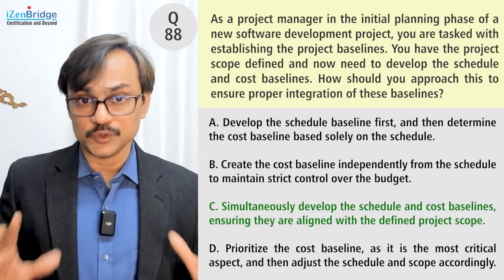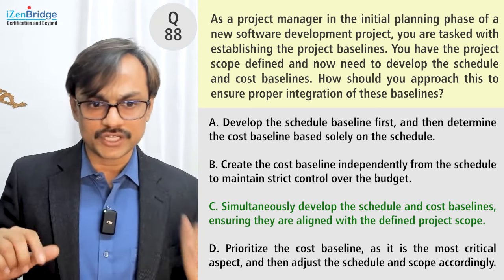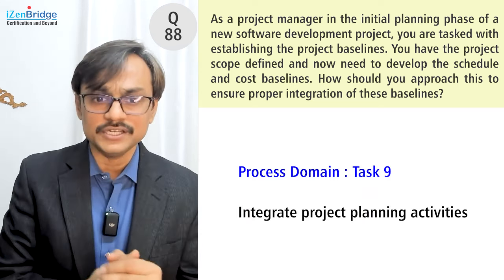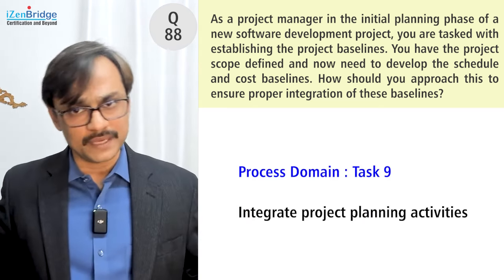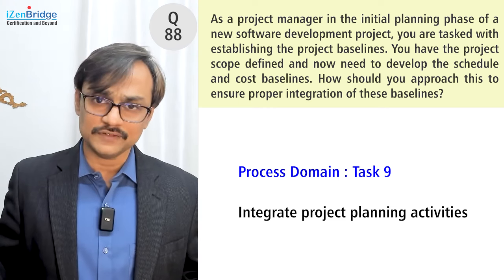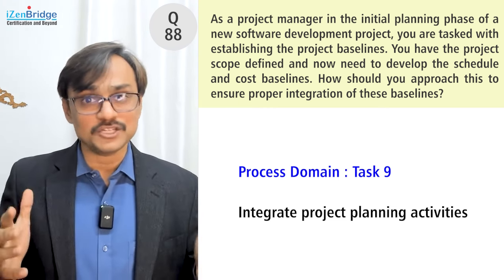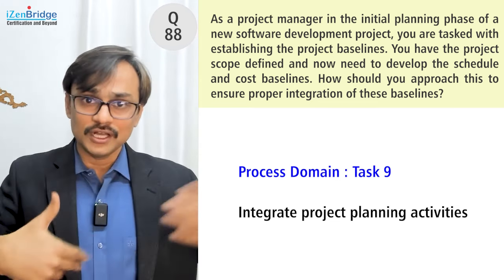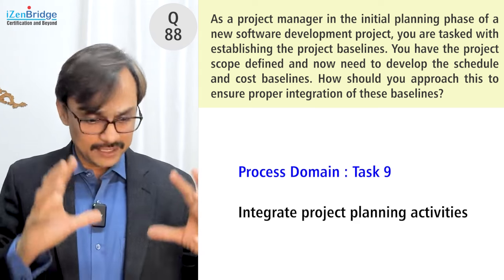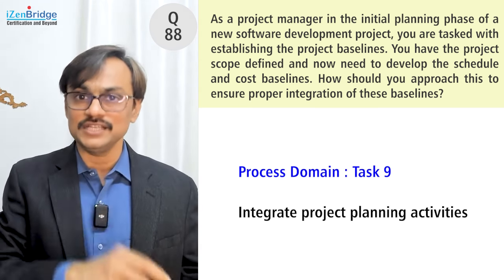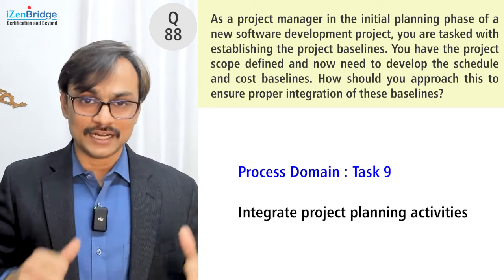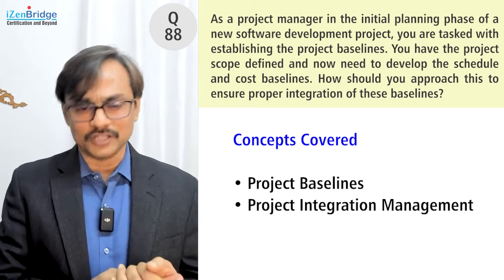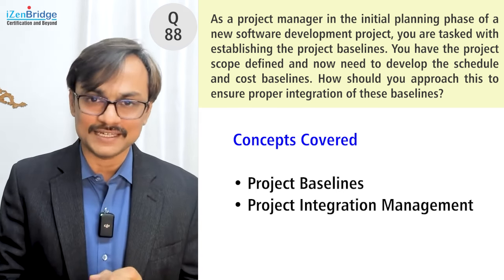Rarely will you face situations with conflicting signals, but when you do, take an educated guess based on available information. The key takeaway is that project planning activities — including baselining — must be integrated. I always say the project management plan is like a book: you may write different sections separately, but you must ensure everything is integrated. Each chapter should connect well with the others. That's project integration management.